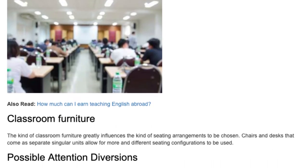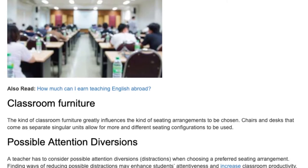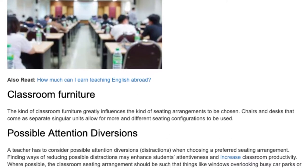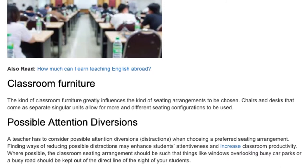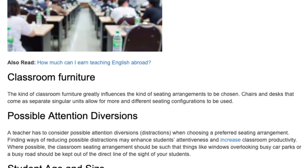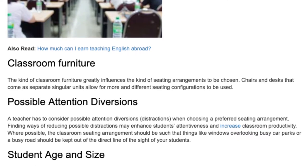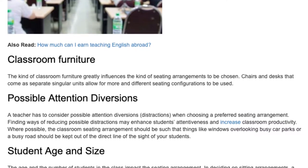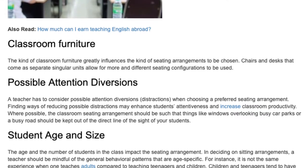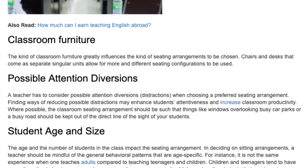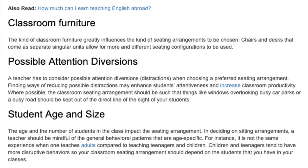Possible attention diversions: a teacher has to consider possible attention diversions and distractions when choosing a preferred seating arrangement. Finding ways of reducing possible distractions may enhance students' attentiveness and increase classroom productivity. Where possible, the classroom seating arrangement should be such that things like windows overlooking busy car parks or a busy road should be kept out of the direct line of sight of your students.